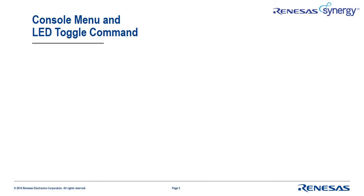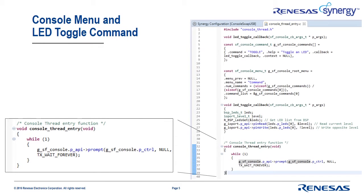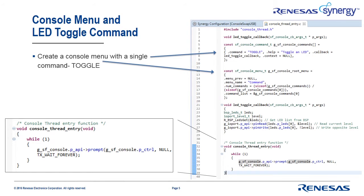Here on the right is the complete user code for the console menu with a simple LED toggle command. It uses the console framework to identify the toggle command in the simple one-command menu. More complex menus and commands would simply add to these two structures. A callback is used to execute the toggle command — it just reads the current LED value and then writes the opposite level.